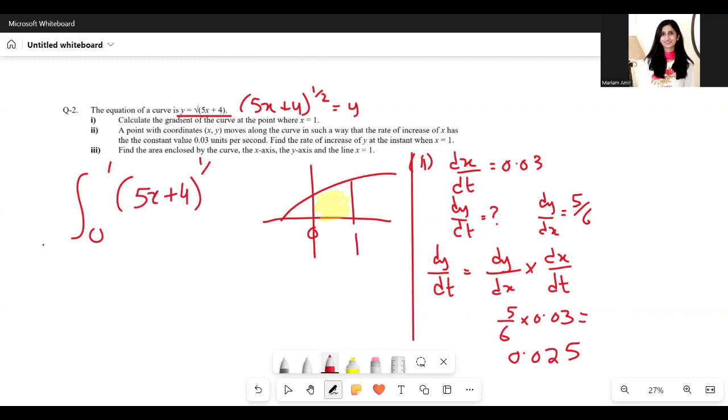So we integrate (5x + 4)^(1/2) from 0 to 1. That's going to be (5x + 4)^(3/2), and then we divide by 3/2, and multiply by the derivative of 5x + 4 in the denominator, which is 5.